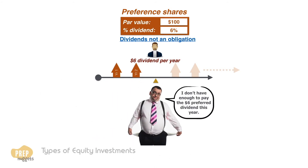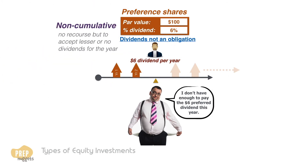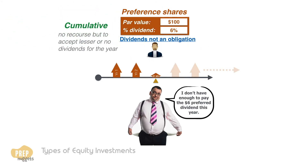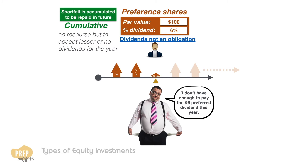If the preference shares are non-cumulative, the preferred stockholders have no recourse but to accept lesser or no dividends for that year, and the shortfall will not be repaid in future. So if the company only paid a $1 preferred dividend for that year, the shareholder cannot expect the shortfall of $5 to be paid in the future. However, if it is cumulative preference shares, any shortfall is accumulated and the company has to make up for it in the future when it is able to do so.